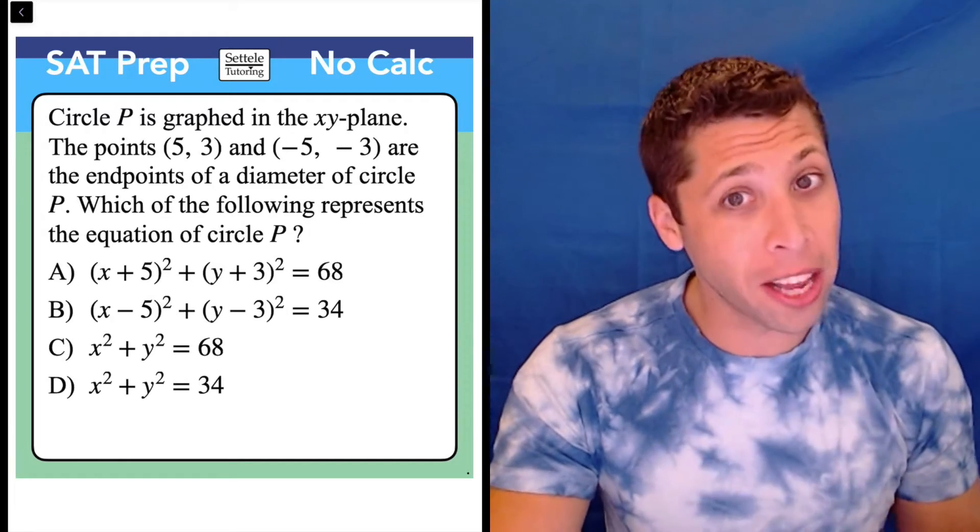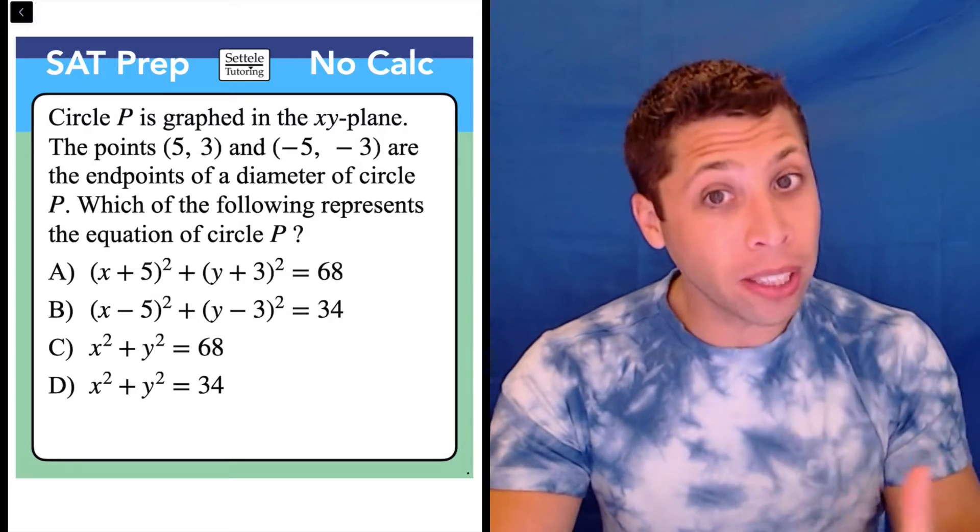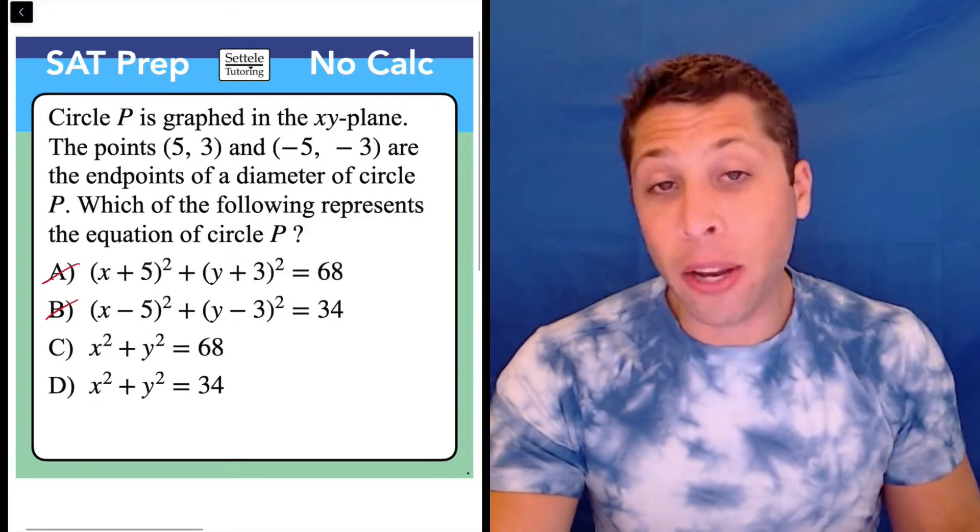In this case, there's a couple ways to handle it. We could do a much more formulaic approach, and if you do that, hopefully if you know the formula for a circle, you'll be able to see that A and B are wrong.